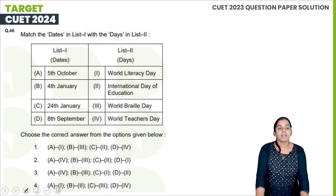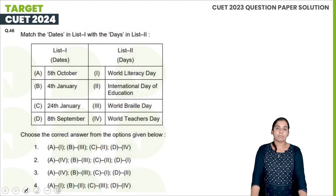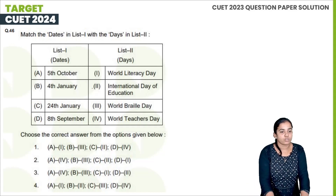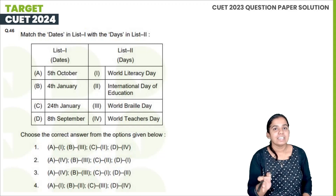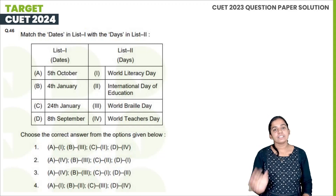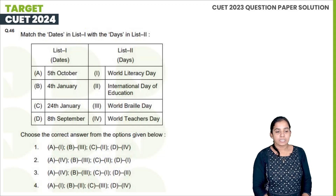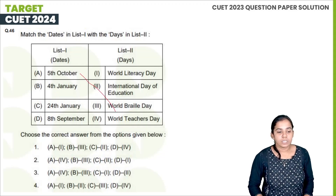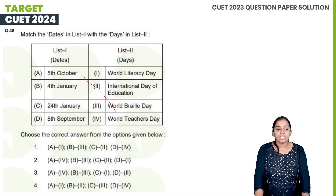Next question: Match the dates. First option — October 5 is World Teachers Day. And the other dates to match are 24th January and September 8th.